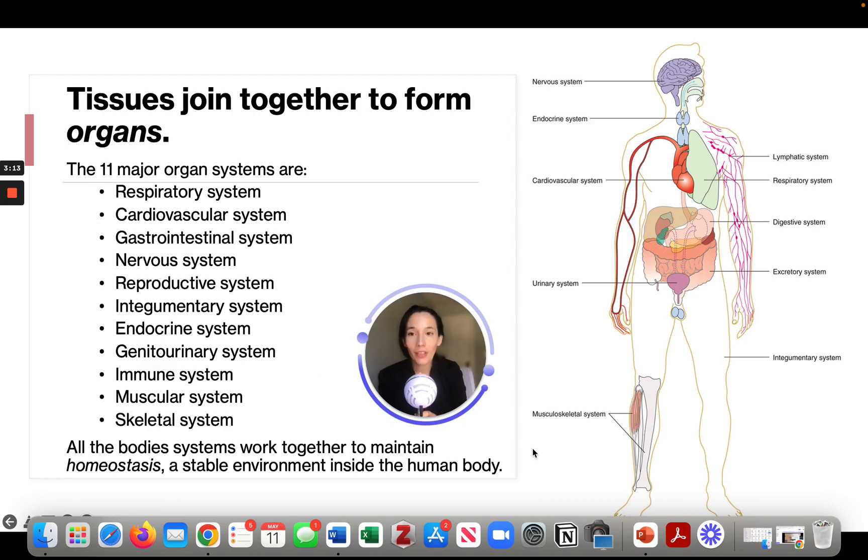So tissues join together to form organs. We have 11 major organ systems in the body: respiratory, cardiovascular, gastrointestinal, nervous system, reproductive system, integumentary system, endocrine system, genitourinary system, immune system, muscular system, and skeletal system. All of these systems in the body work together to maintain homeostasis, which is a stable environment inside the body. We're going to go through all of these different systems in later modules.